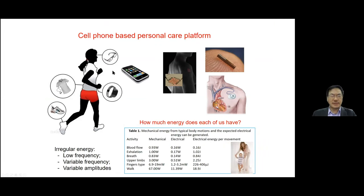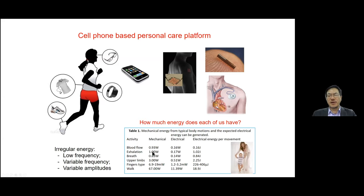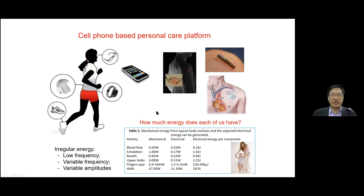If you look at the energy around us, we have energy from each of us. Blood flow can generate 0.16 watts of electricity, breathing can produce 0.14 watts, and walking on average can yield 11 watts of electric power. These are theoretical predictions, but the challenge is how to convert our body motions into electric power. That's the work we've been doing for the last 15 years. We're going to present applications using cellular materials for fiber-based structures.